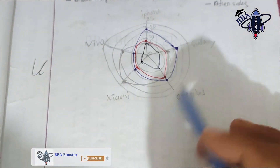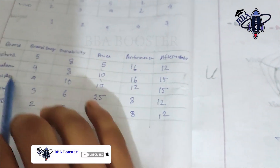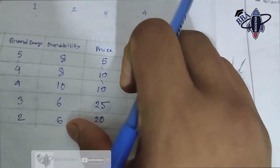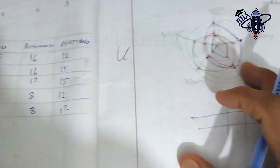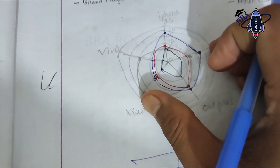This is the perceptual mapping exercise. We have completed the perceptual mapping. The calculation is done and the presentation of the positioning map is complete, showing where each brand stands relative to the others.